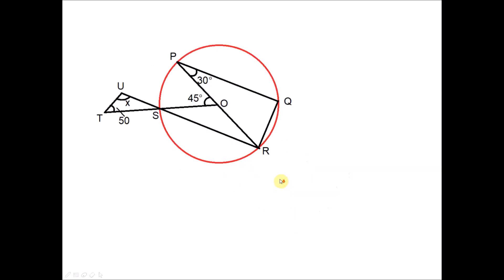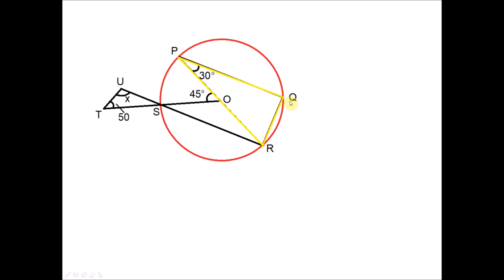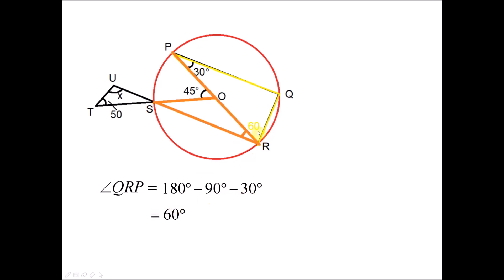Now we look at the diagram. The first thing we need to look at is this yellow colored triangle. We try to fill in the values of these angles. First we find angle QRP. Since PQR is an angle subtended at the circumference of the circle by the diameter, because PR is the diameter, this angle is 90 degrees. So angle QRP equals 180 minus 90 minus 30, which is 60 degrees.